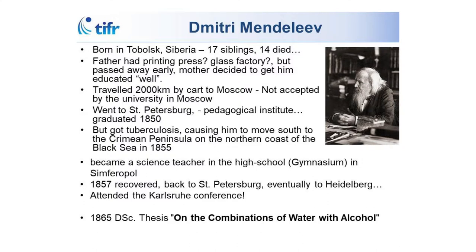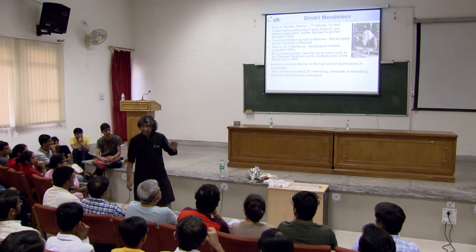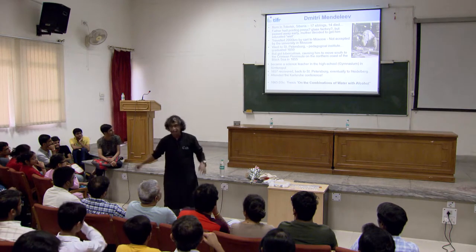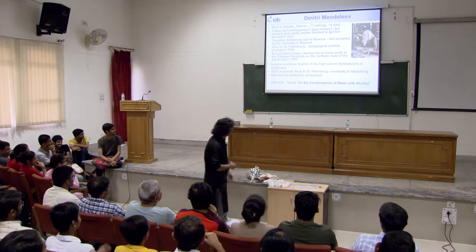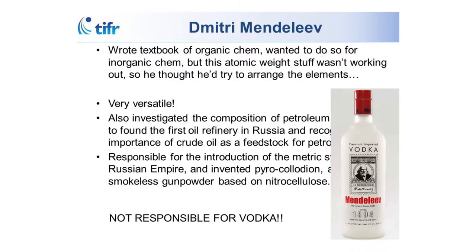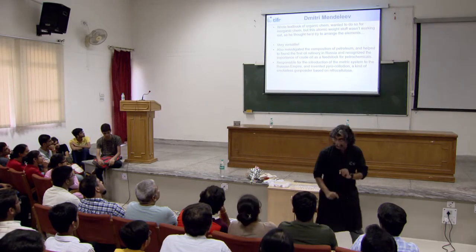He graduated but the north of Russia was very cold, he fell sick and moved south, starting his job as a science teacher in a high school. Mendeleev was a science teacher in a high school. Eventually he recovered and in 1857 went back to St. Petersburg wanting to do research and get a PhD. In those days the place to go was Germany — he went to Heidelberg and attended the Karlsruhe Conference. His DSC degree thesis was called On the Combinations of Water with Alcohol — nothing to do with the periodic table.